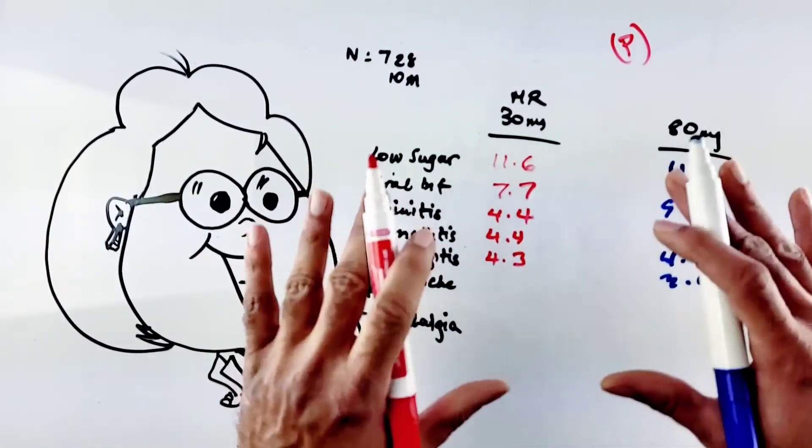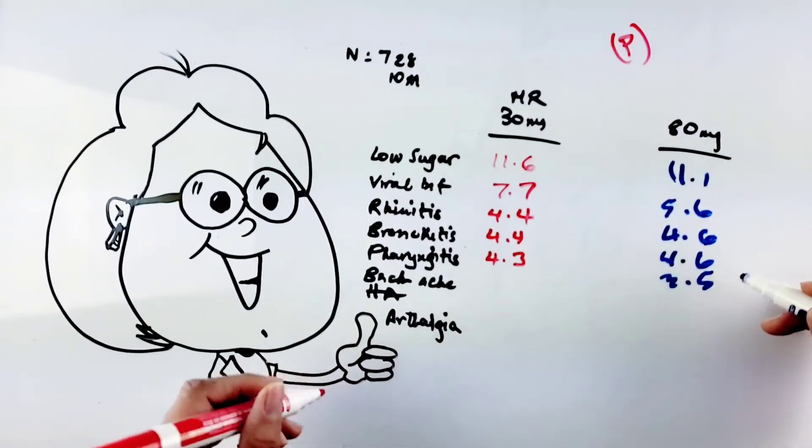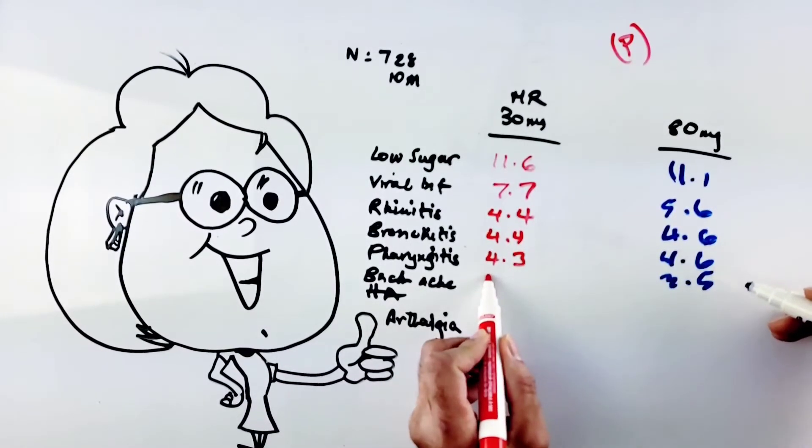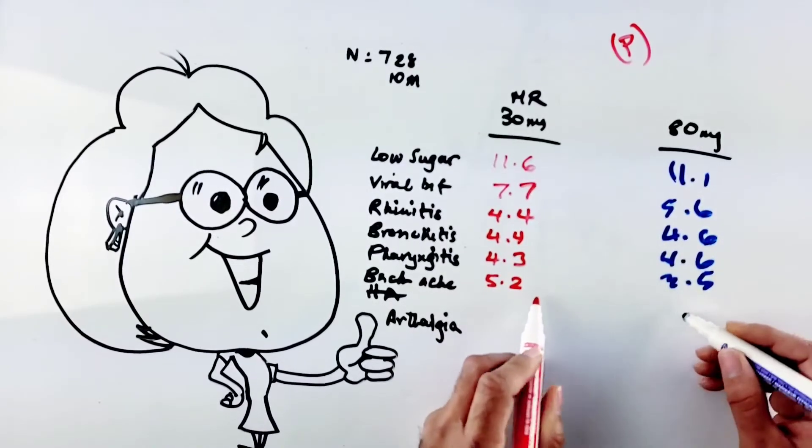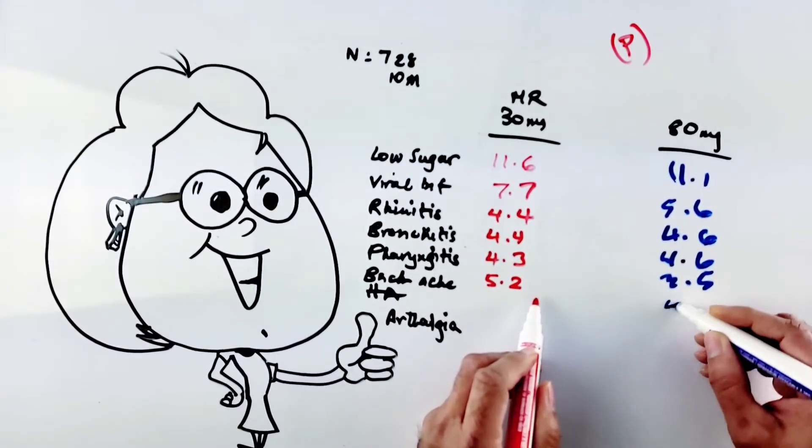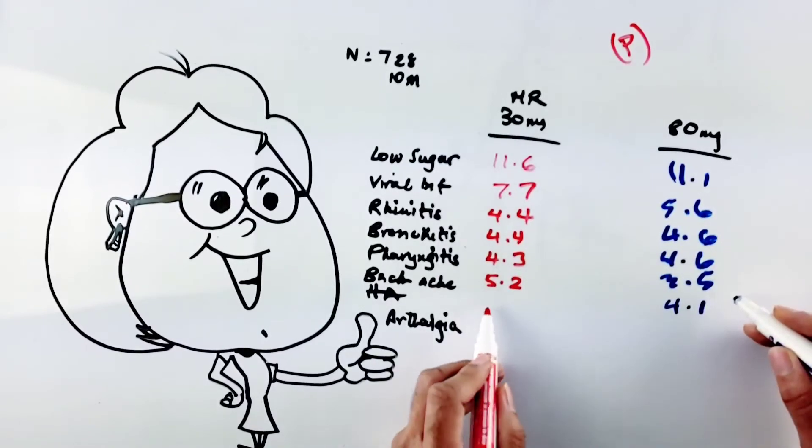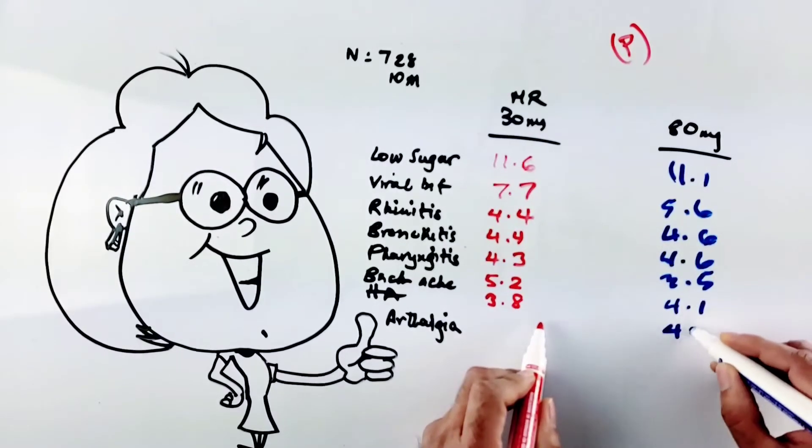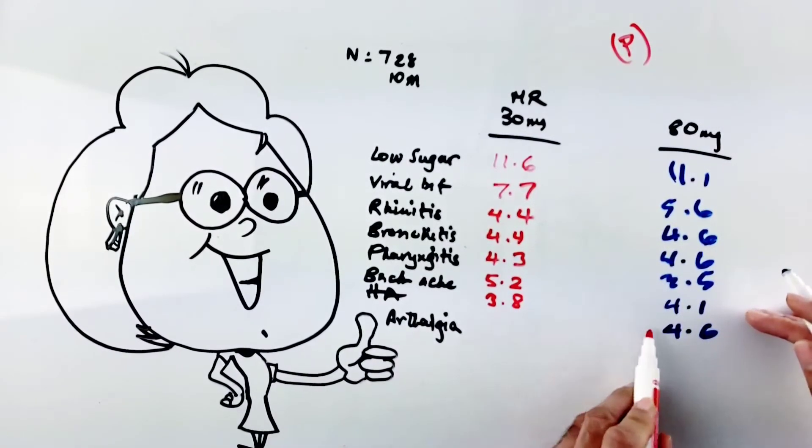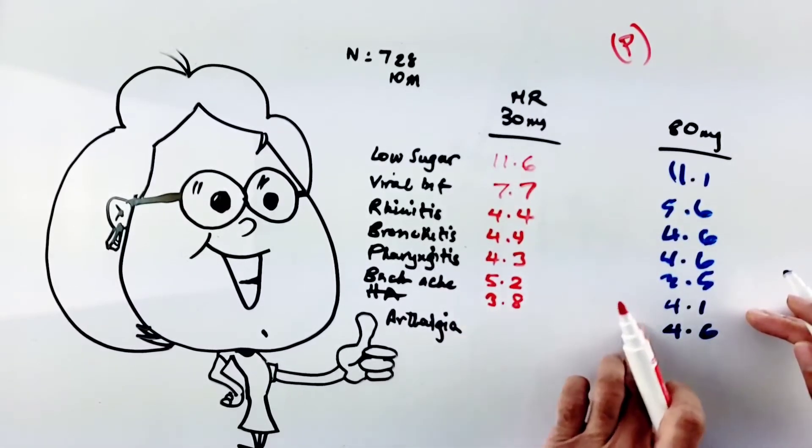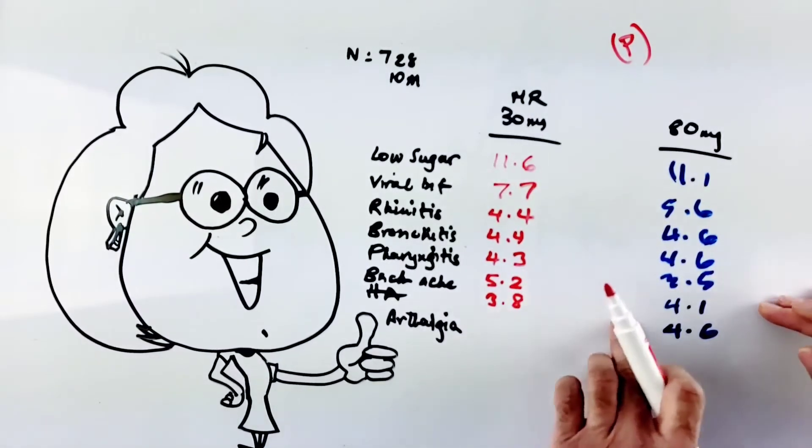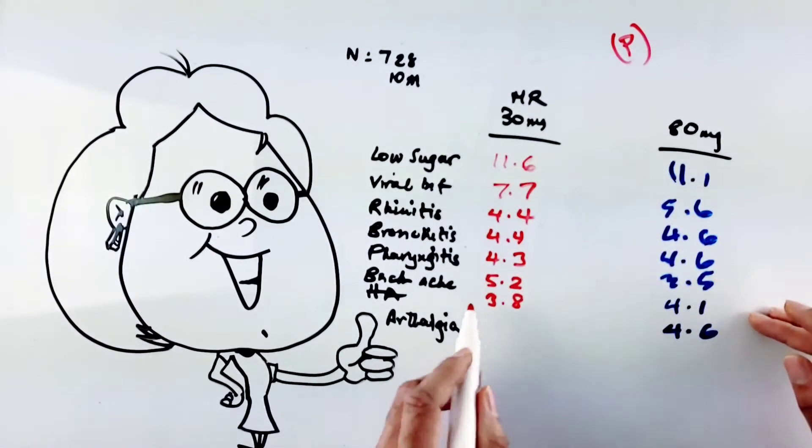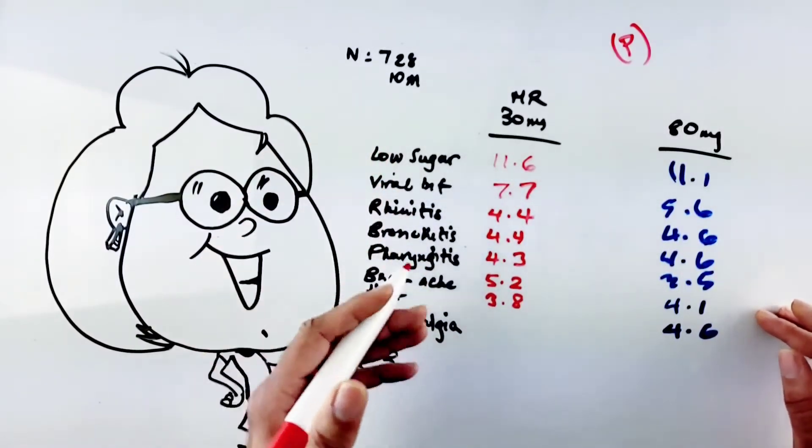Now two other surprising side effects were backache and arthralgia. The backache was in 5.2% of people on the modified release as opposed to 4.1% in the regular. Headaches was 3.8% as opposed to 4.6%. I can tell you again from looking at lots of different studies that is not a particularly abnormal result to see in a placebo arm being around this same range, so the true incidence of headache really attributable to the Diamicron is probably maybe just 1%.